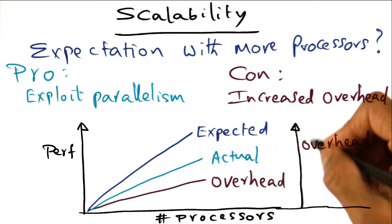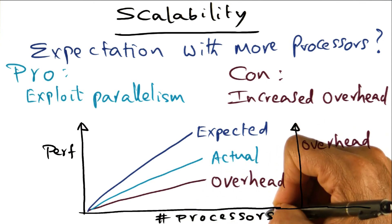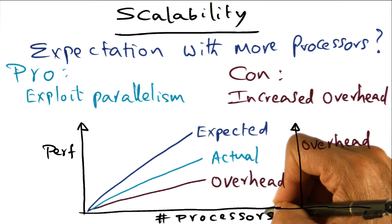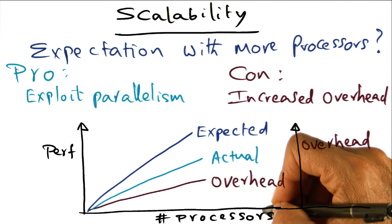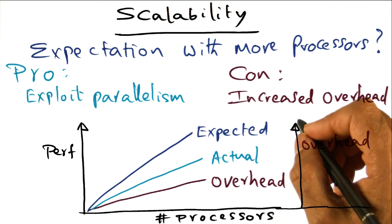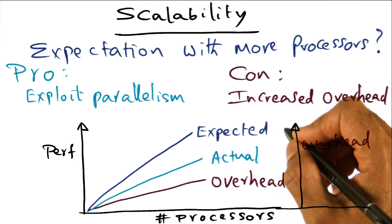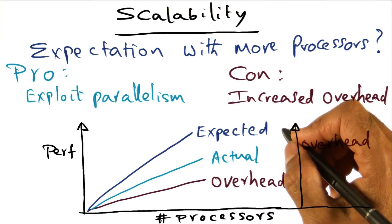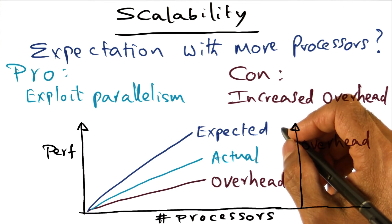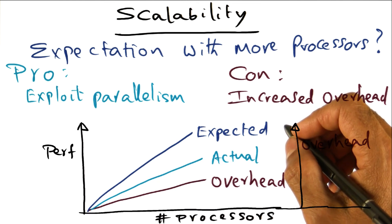This buildup of overhead with the number of processors happens in true shared memory multiprocessors. And this is even more true in the case of DSM, which is implementing the shared memory abstraction in software on a cluster.